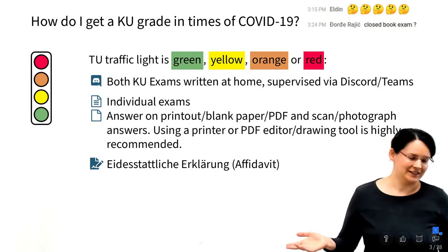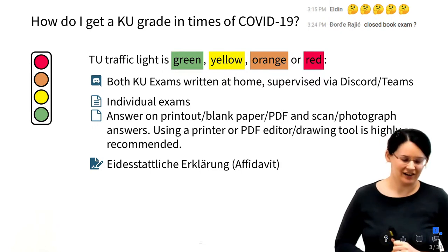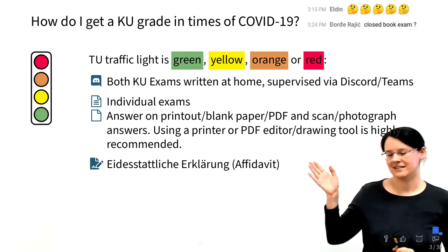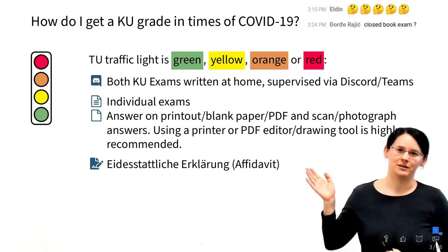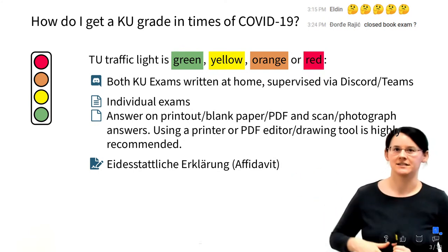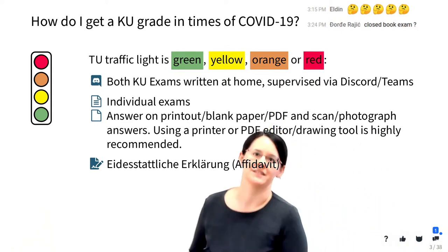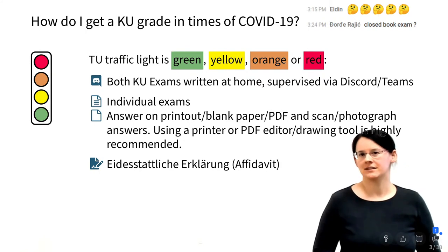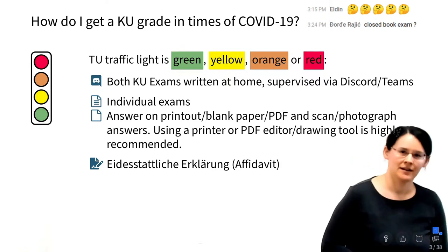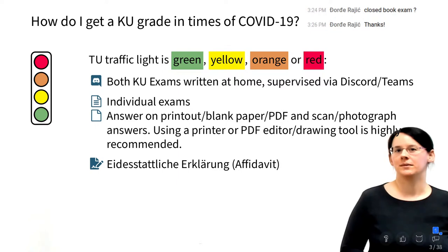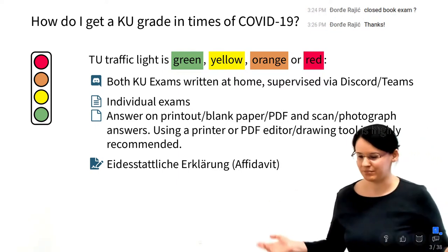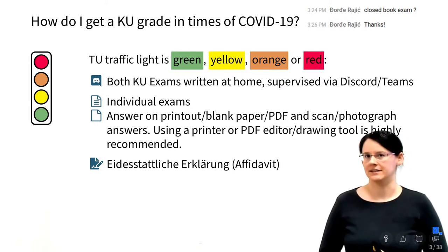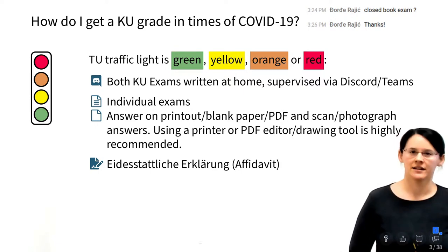We will also ask you to sign an eidesstattliche Erklärung confirming that you didn't cheat, since you'll be sitting at home. This is serious — you confirm that you solved the tasks independently. Regarding closed book: yes, it is essentially closed book, but it's okay to look at your own previous notes from the exercises and your own solutions. You are not supposed to talk to each other or use someone else's prepared solutions.